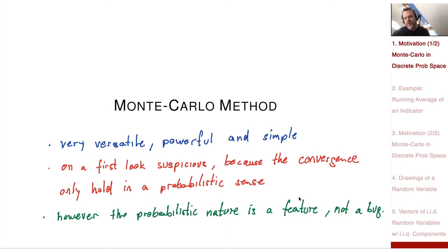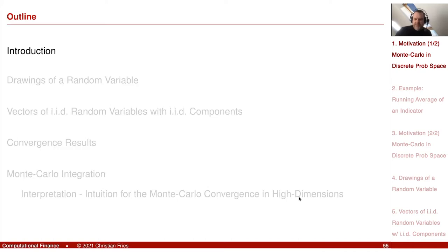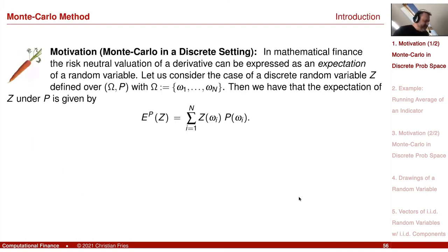Because it will enable certain good properties, like that the method breaks the curse of dimension. I'd like to start with a simple motivation that already describes the method — you already know the method after the motivation. Then I would like to recall two concepts: what is the drawing of a random variable, and how do we construct vectors of random variables? And then we will discuss the convergence result.